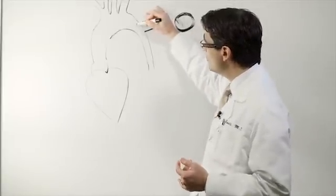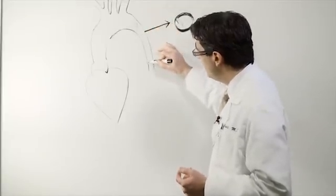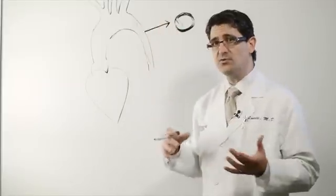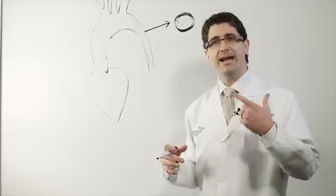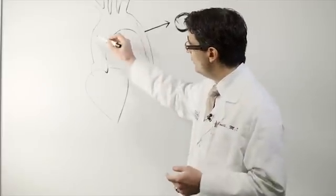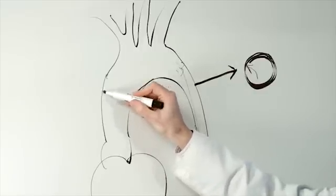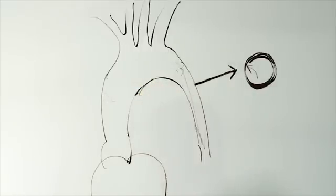The tear most of the time will extend downstream, but not upstream in that situation. Or it'll be referred to as a type A dissection. A type A dissection is when the tear is in the first portion of the aorta.